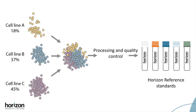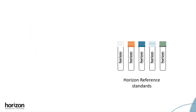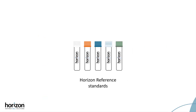After the correct cell line blend is achieved, we then process and analyze the cell blend into five different formats. We then verify that each of these reference standard formats contains the desired genetic variants at the expected allele frequency or abundance. I will now run through the five different formats and show you where they can be used best in a typical diagnostic assay workflow.